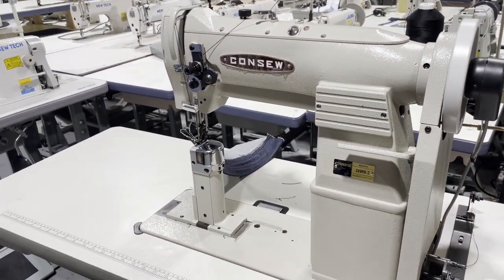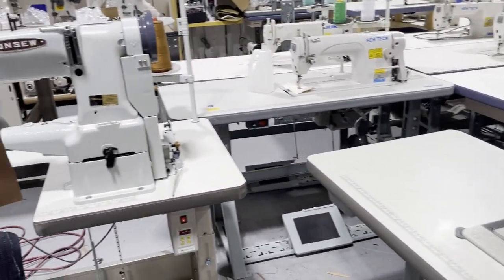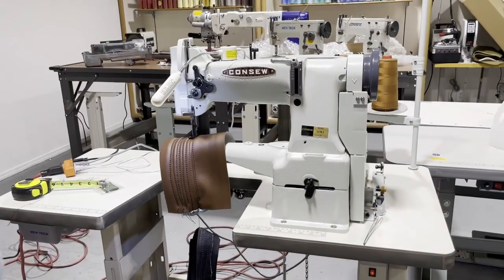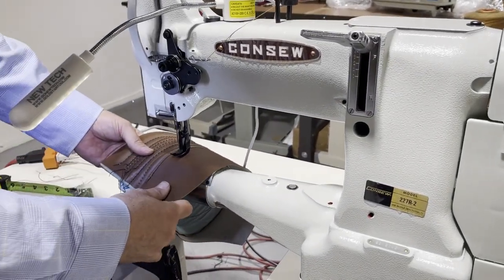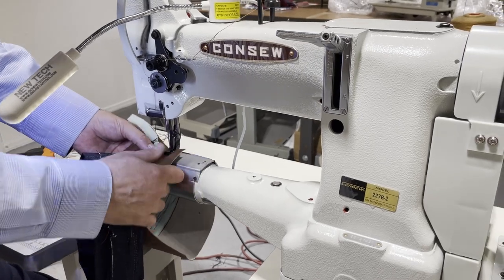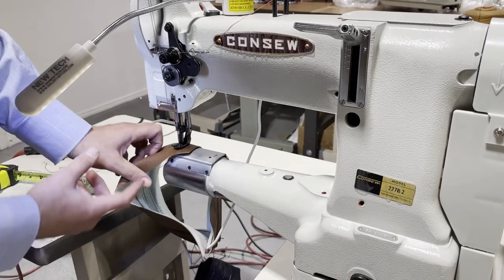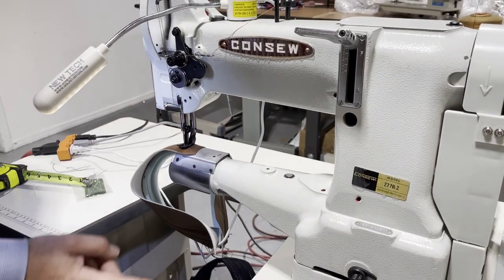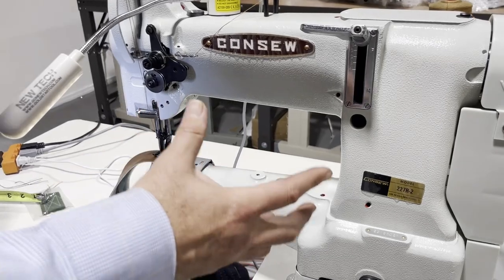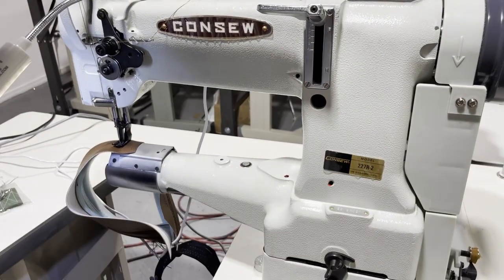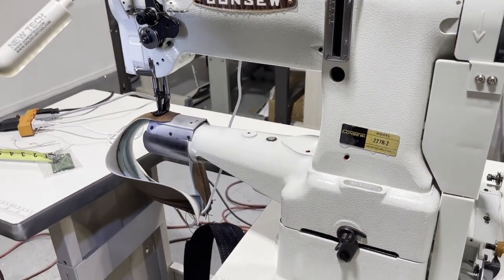So this is a post bed. That's a post bed. That's a roller foot. This is a walking foot. Then we're going to come to this one. This is a walking foot, but it's a cylinder bed. Instead of post, it's a cylinder. So people that want to do a lot of bags, and they need cylinder bed. Imagine you have a sleeve. You want to go inside. This one, that's a two, but it's not a post. Again, smaller machine, 227R-2. No oil needed. Only drop oil where you need to. What else I want to say? It's a walking foot. It's a triple feet.